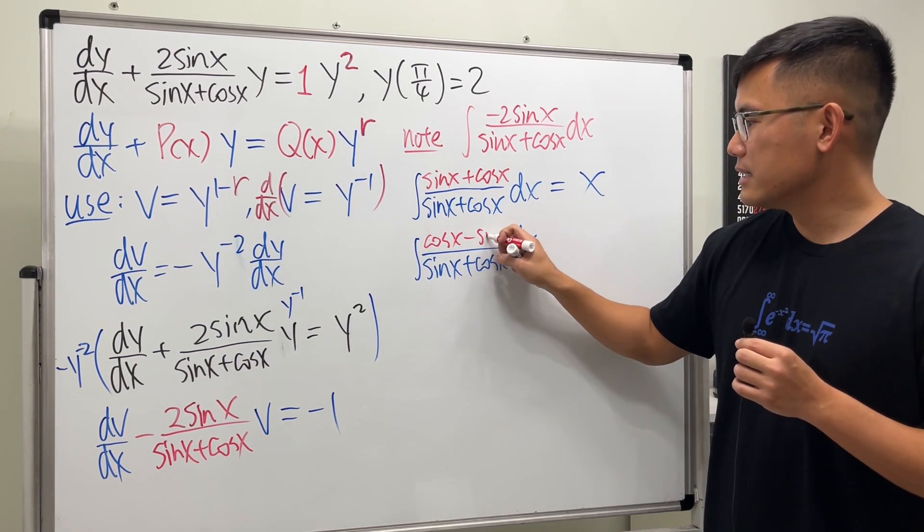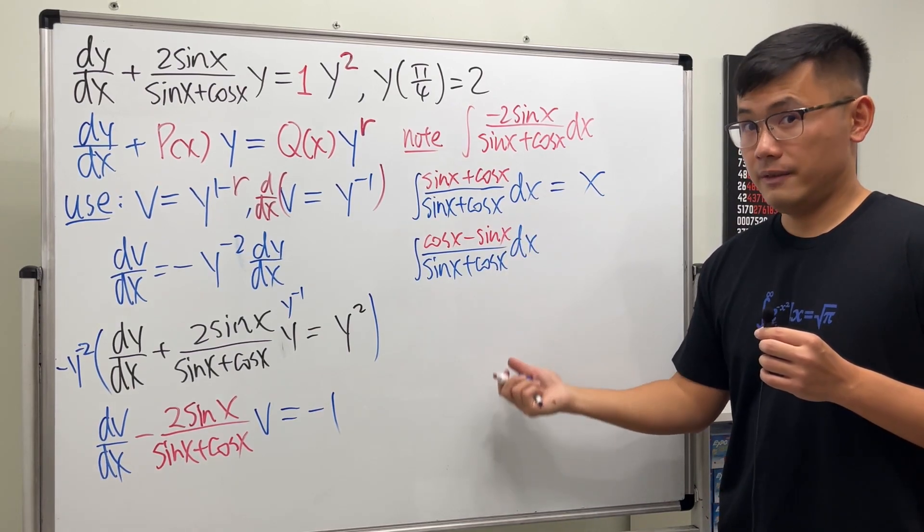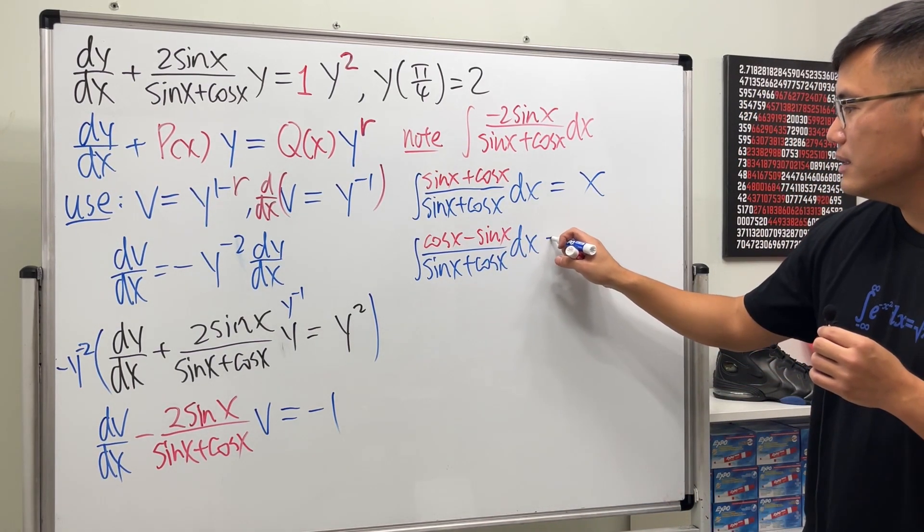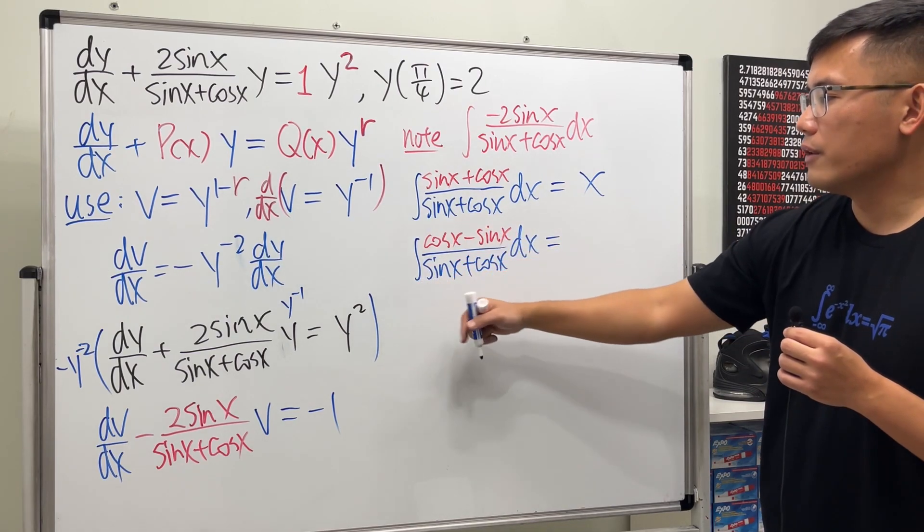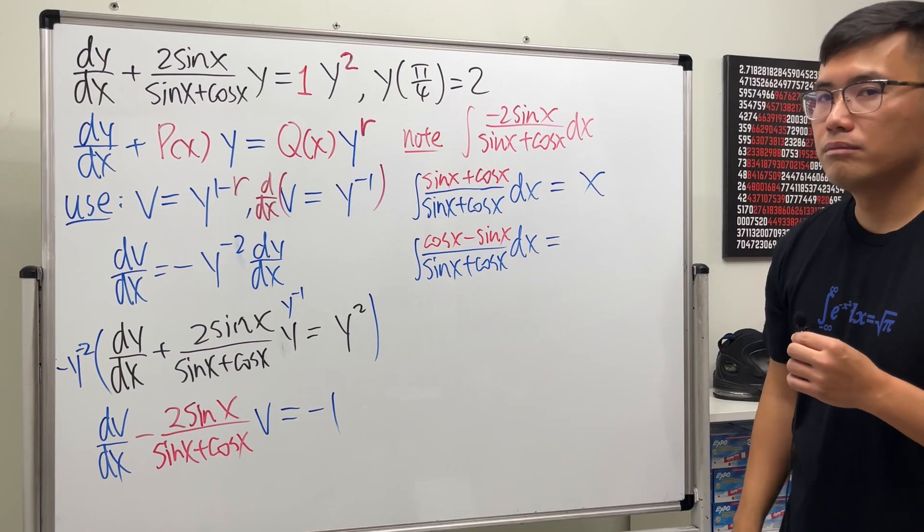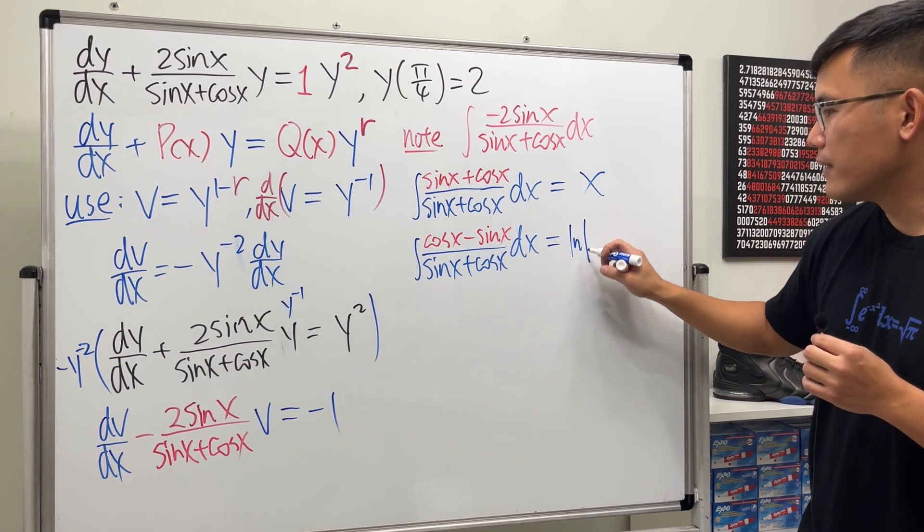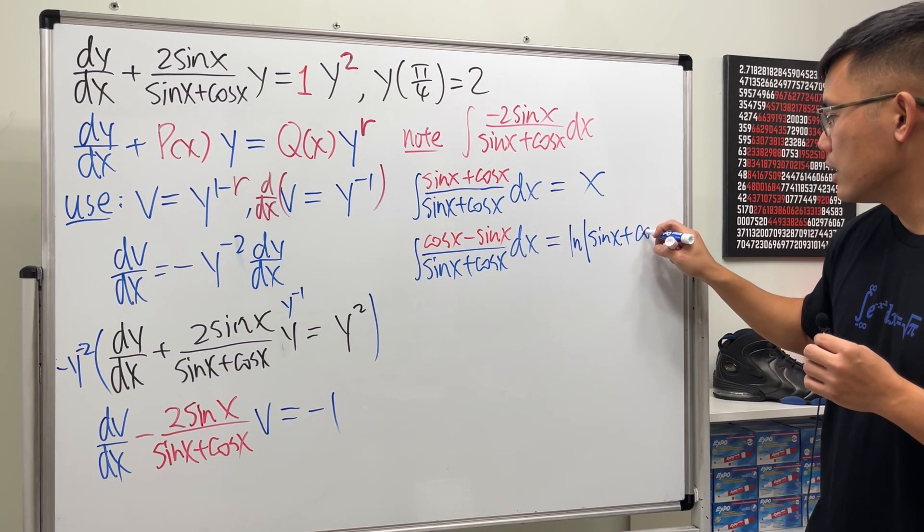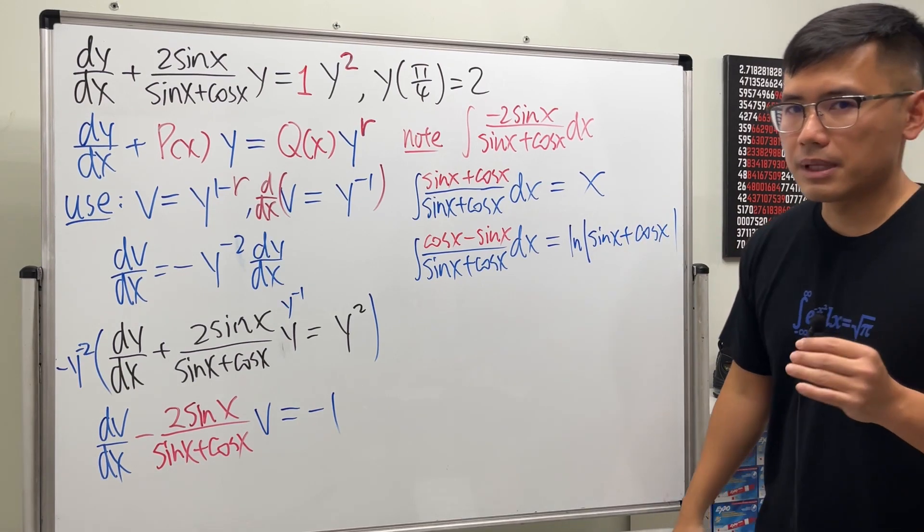And this right here is equal to the integral of 1 over u in the u world, where u is the bottom. So we get ln absolute value of sine x plus cosine x. Don't worry about the plus c.